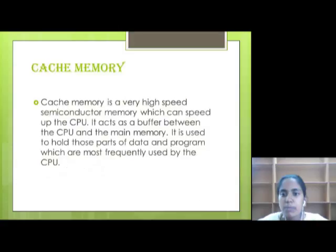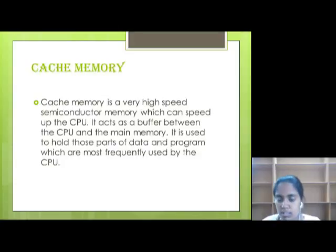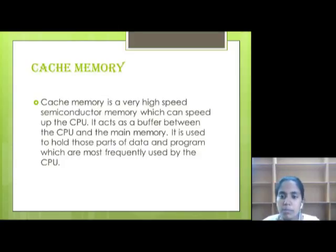Cache memory is a very high-speed memory. Basically, it is limited storage in our computer, up to around 150 MB. It is a very limited thing — it acts as a buffer.